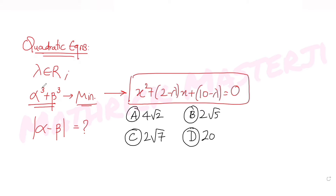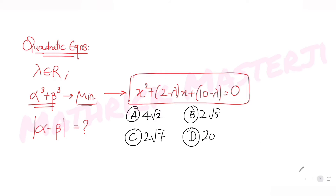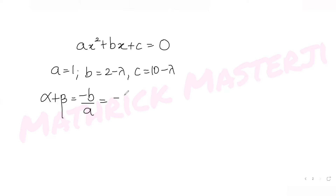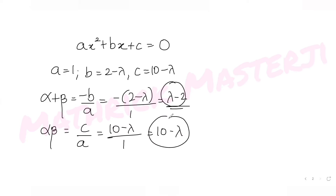First, I compare the given quadratic with the general form. I get a = 1, b = (2 - λ), and c = (10 - λ). Now, the sum of the roots α + β = -b/a = -(2 - λ)/1 = λ - 2, and the product of roots α·β = c/a = (10 - λ)/1 = 10 - λ.